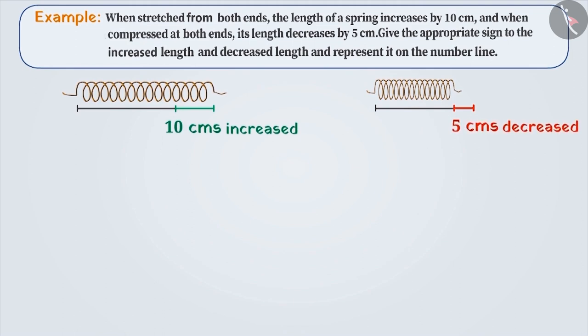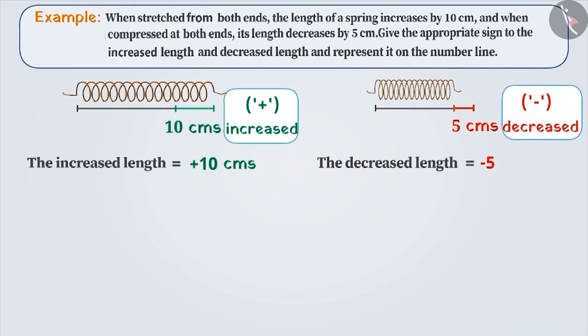Increased length and decreased length are both contrasting situations. Generally, we express increase with a plus sign and decrease with a minus sign. This way, the increased length of the spring can be expressed as plus 10 and the decreased length can be expressed as minus 5 cm.